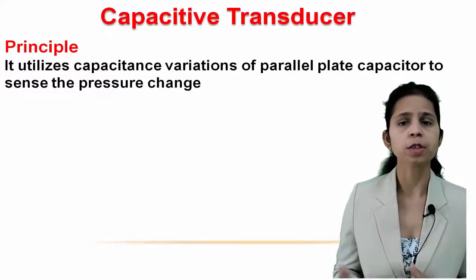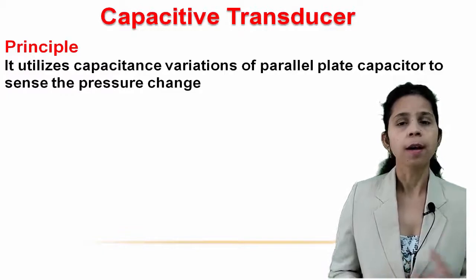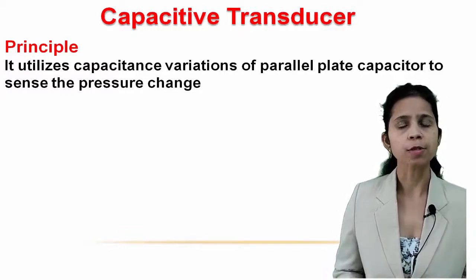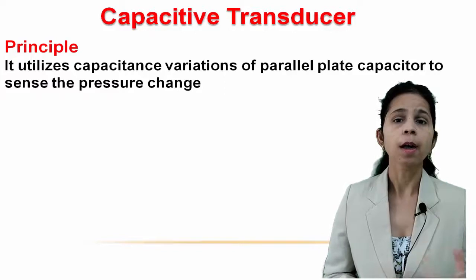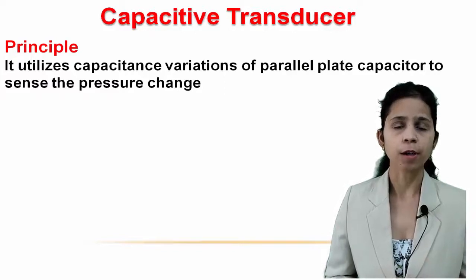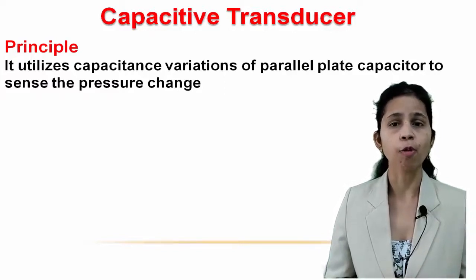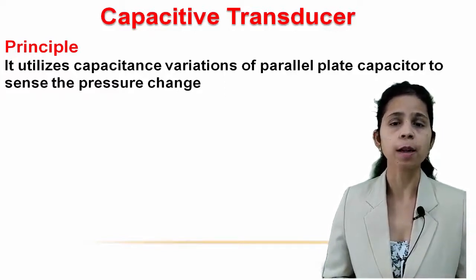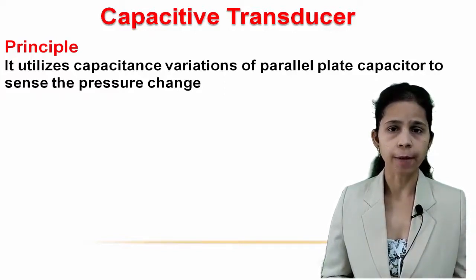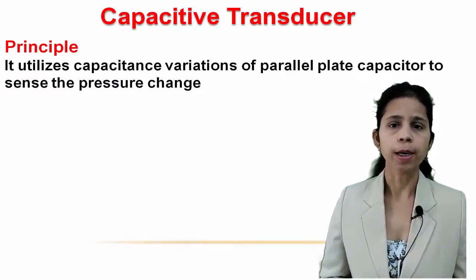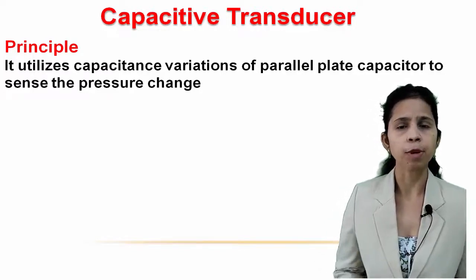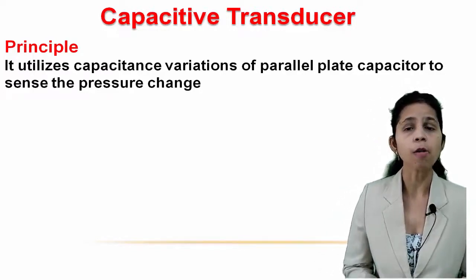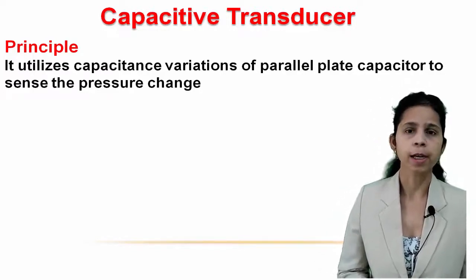Capacitive transducers are extensively used to measure linear and angular displacement, acceleration, velocity, force, pressure, liquid level, humidity, and sound. Capacitive transducers have wide applications.